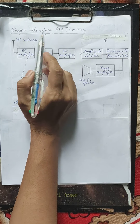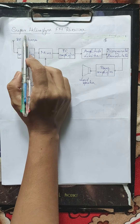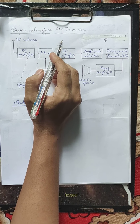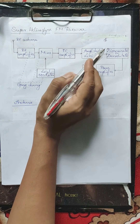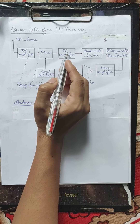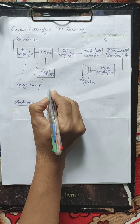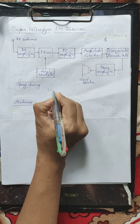A superheterodyne FM receiver is used for receiving frequency modulated signals. It gets its name by combining two words: 'super,' because it handles frequencies above the audio frequency range known as supersonic frequencies, and 'heterodyne,' because a process of frequency mixing known as heterodyning occurs in the mixer. By combining these two words, this receiver is called the superheterodyne FM receiver.